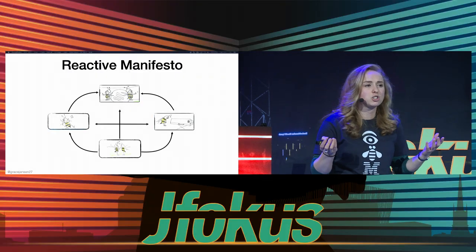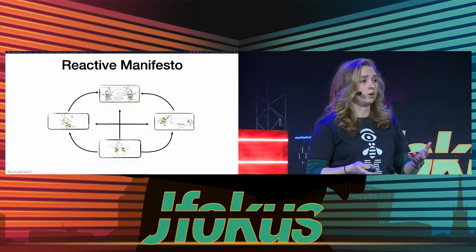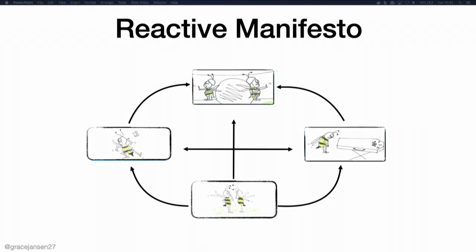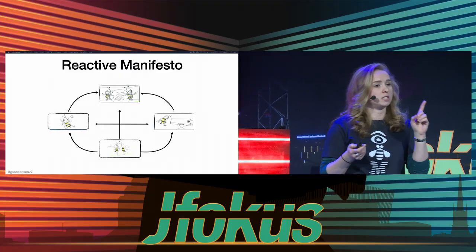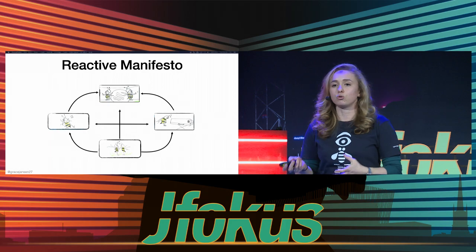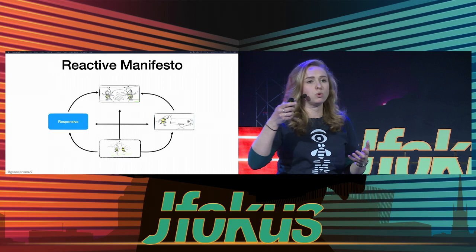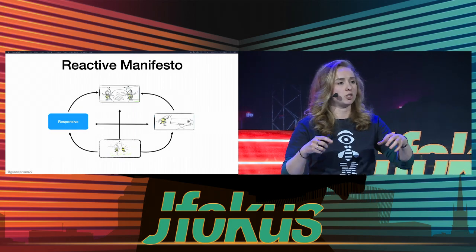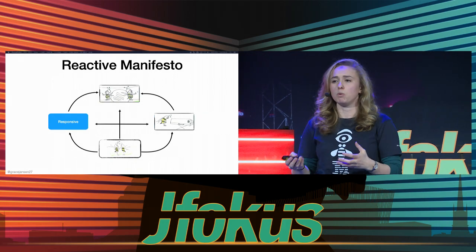So how does this relate to software? It relates really well to the Reactive Manifesto, a set of principles based on four cornerstones set up by Jonas Bonér in 2013. It specifies what behaviors our applications should have to deal with the demands of modern users. The first cornerstone relates to the dancing bees and food foraging — as soon as the scout returns, observer bees collect the information and immediately dash off. That's responsiveness, and it's what we want from our applications.